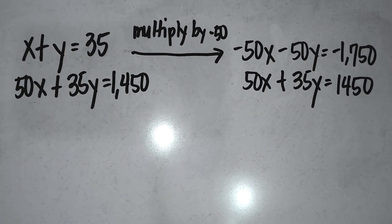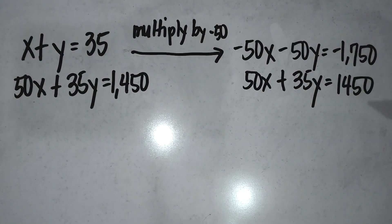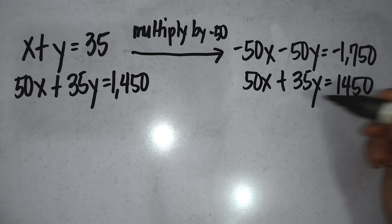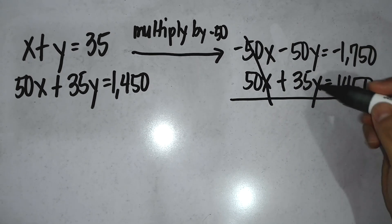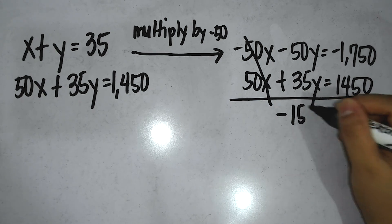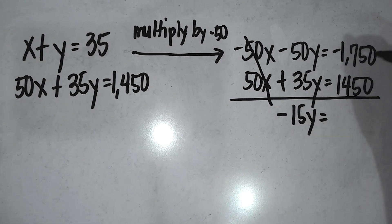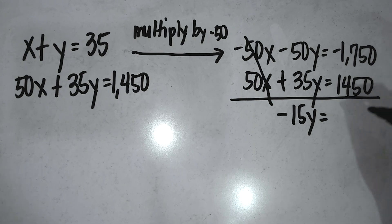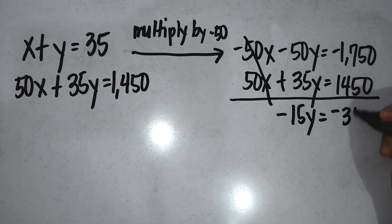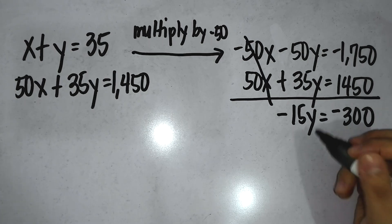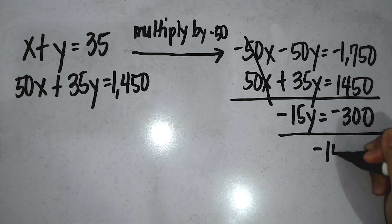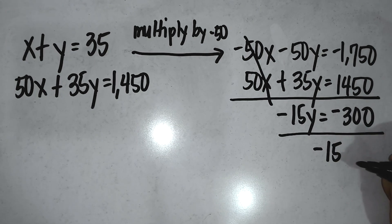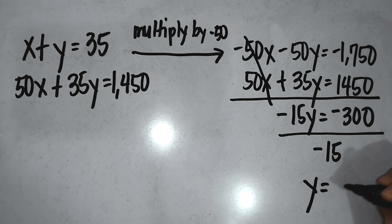For step 3, add the equations from step 2 to eliminate one variable and solve for the remaining variable. We eliminate the x column. Then, negative 50y plus 35y is equal to negative 15y. Then, negative 1,750 plus 1,450 is equal to negative 300. Then we divide both sides by negative 15. The answer is y is equal to 20.